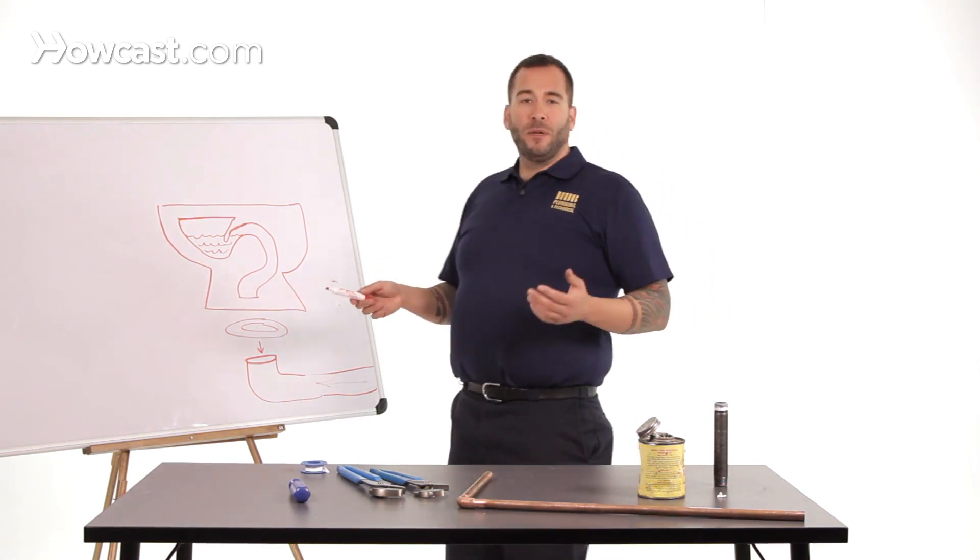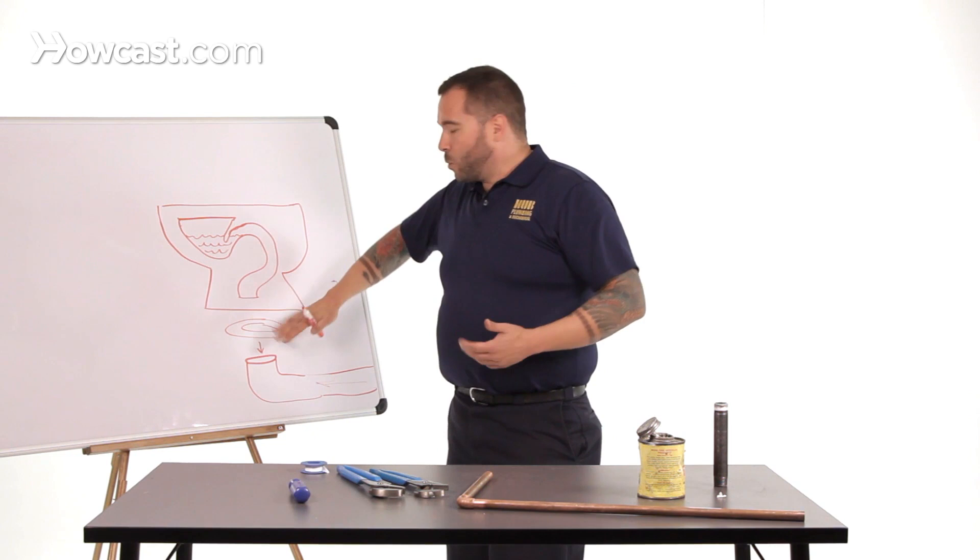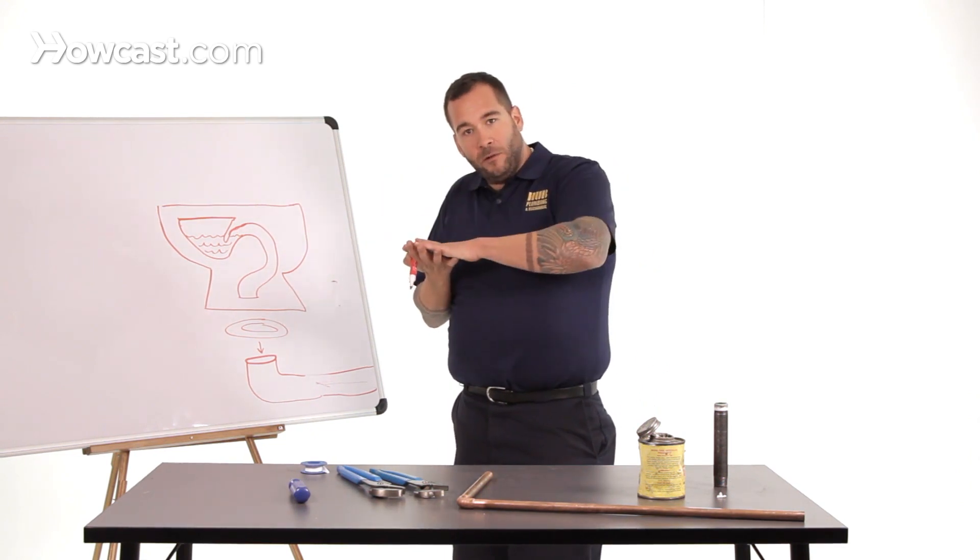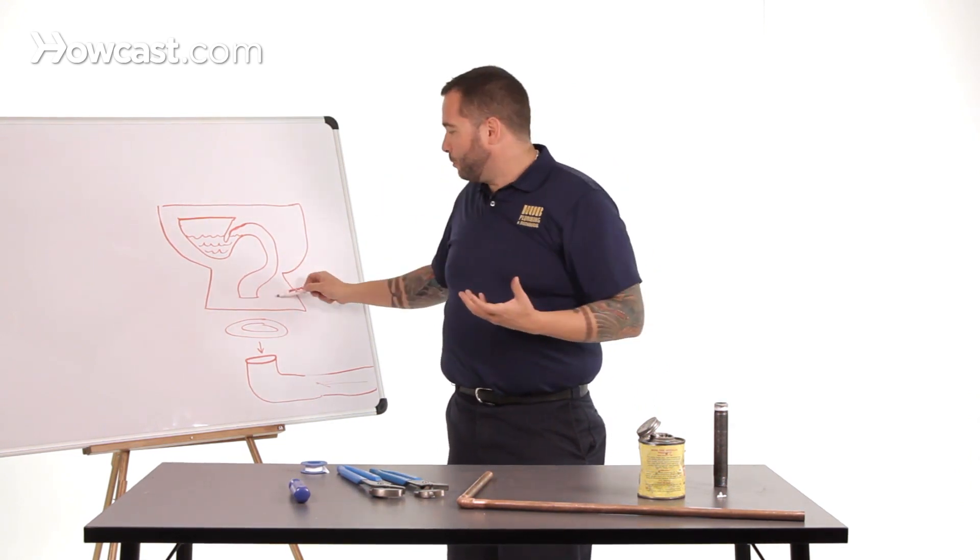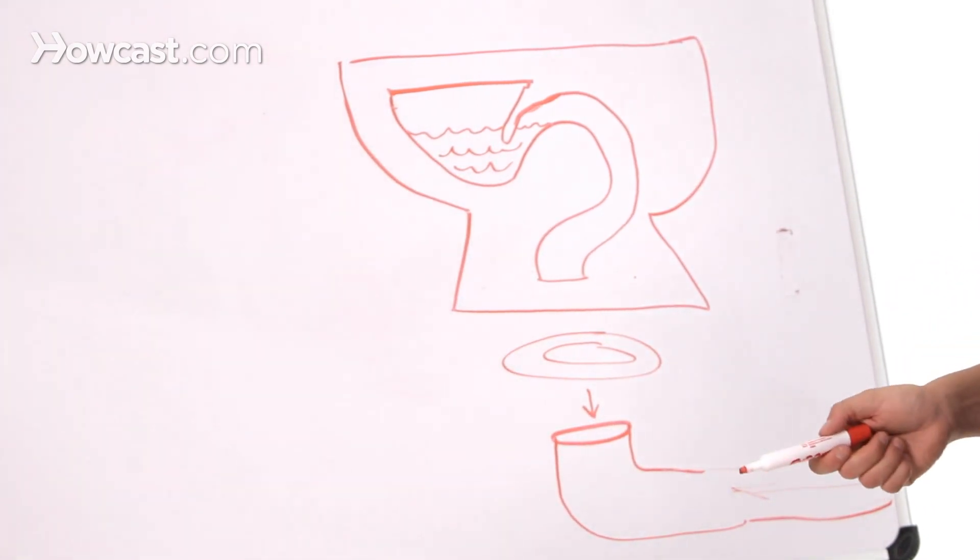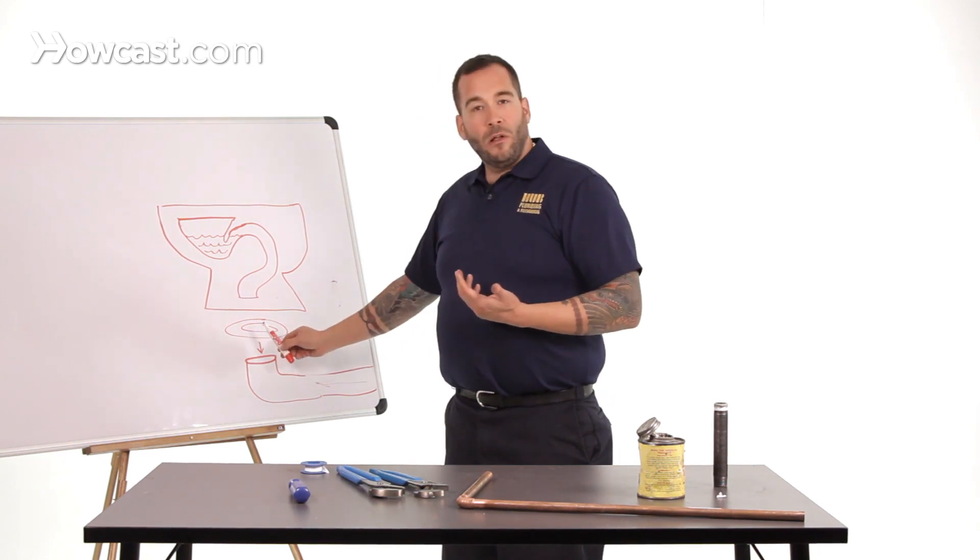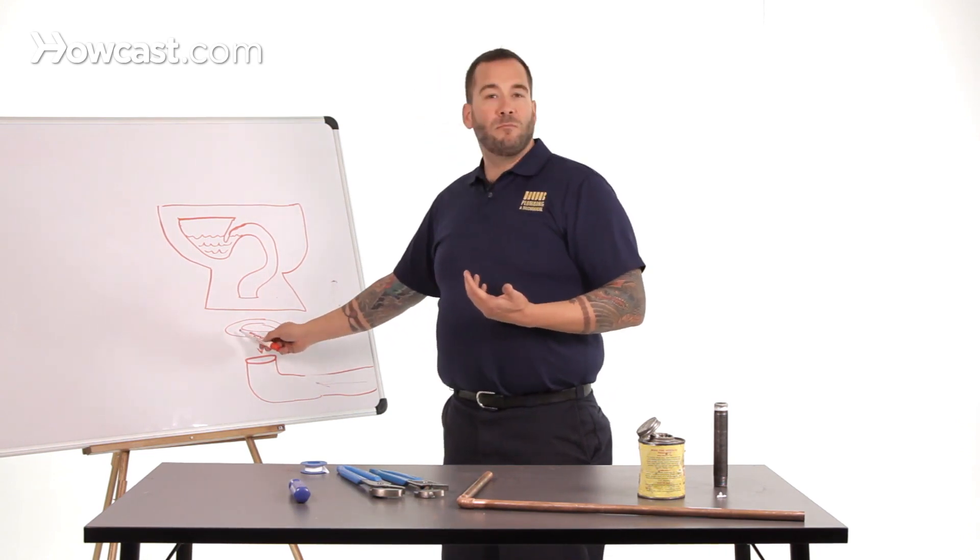Now what happens normally when the toilet's not under what we call back pressure from the sewer, this wax seal kind of squishes down and makes a watertight seal between the porcelain of the toilet bowl and the iron flange that sits on top of the sewer pipe. But a lot of times what happens when the clog occurs is that this seal is blown out.